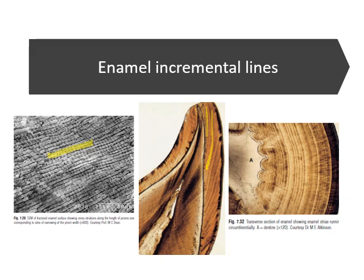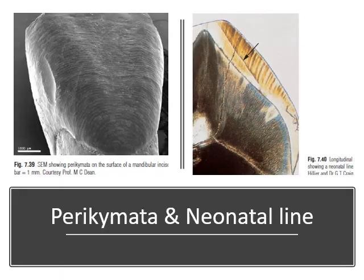An important aspect is that when striae of Retzius reach the surface of enamel, they form perikymata ridges. British authors call them perikymata grooves and perikymata ridges — the ridge being the positive landmark above the surface and the groove below. These alternating ridges and grooves are surface manifestations of enamel striae. American authors call them imbrication lines of Pickerill, since Pickerill was an American scientist.